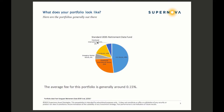Here's a very popular 2035 retirement date fund. U.S. stocks and U.S. bonds accounted for about 62% of the portfolio, a big chunk in developed international stocks, and not a lot in the other asset classes. Yet this portfolio only charges around 0.15%.